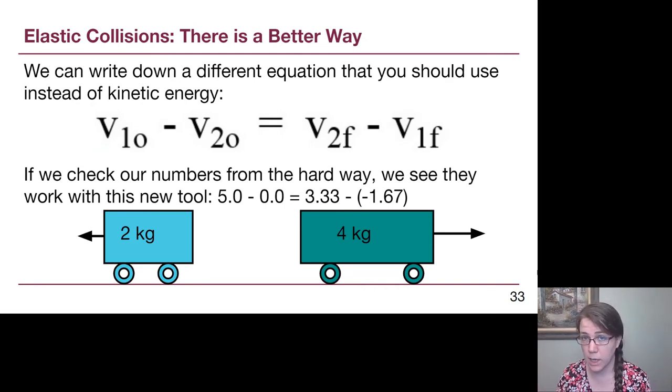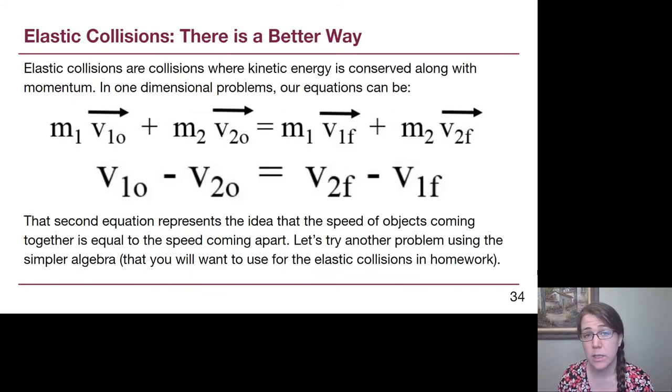So this equation that is now on the slide is the one that will be provided on equation sheets and that we should be using to solve elastic collision problems. So if we plug in our results from the previous example, 5 minus 0 is equal to 3 and a third minus a negative 1 and two thirds, which adds up to 5. So that does work with the method that we were using. So elastic collisions in our Physics 125 course are going to use these two equations. Those velocities on that second line should also have the arrows above them. They are still caring about plus and minus for this one-dimensional motion. But it's an easier kind of known tool that can be used in one dimension, which is all we're going to be working with elastic collisions on.